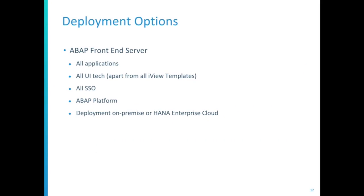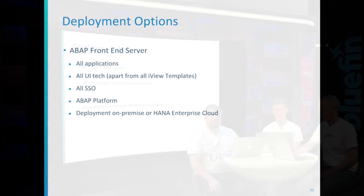Finally, deployment options — how do you get this up and running? The first option is the ABAP front-end server, which supports all the applications and all the UI technology: SAPUI5, DIN Pro ABAP, SAP GUI for HTML, Screen Personas, and all the different types of reports — BEX, Design Studio, and URL navigation. It doesn't support iView, however, but it does support all SSO options. It's deployed on ABAP and can be deployed either on-premise or via HANA Enterprise Cloud.